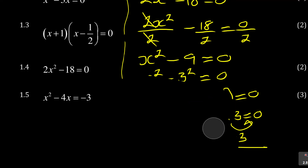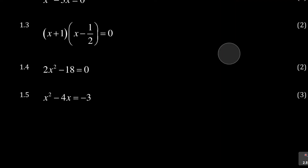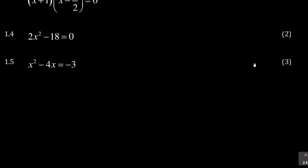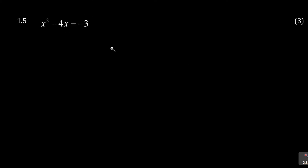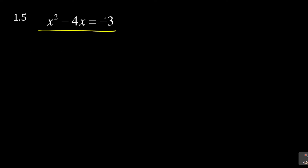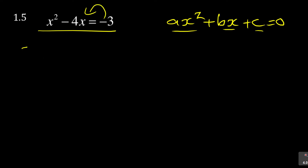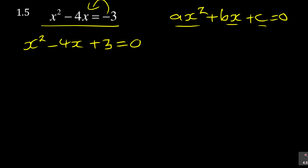Now let's look at 1.5 — this one is 3 marks for a reason. If they give you x squared minus 4x minus 3, you need to arrange it as ax² + bx + c = 0. Take the 3 to the other side so you have x squared minus 4x plus 3 equals zero. From here you can factorize.